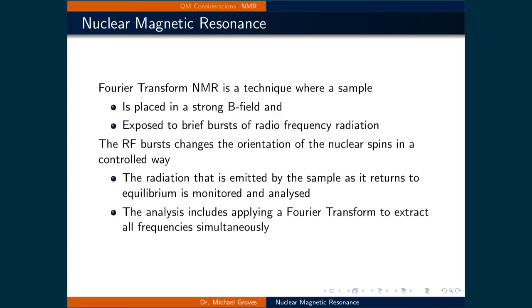Fourier Transform NMR is a powerful technique which can measure multiple Larmor precession frequencies simultaneously. This is useful because as molecules become more complex, there will be many Larmor precession frequencies to measure to get a complete spectra. In practice, what happens is a sample is placed in a strong magnetic field and is then exposed to brief bursts of radiofrequency radiation.